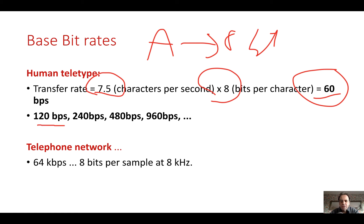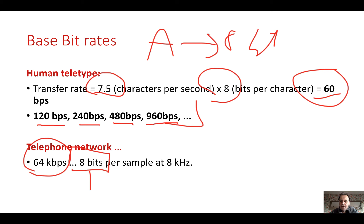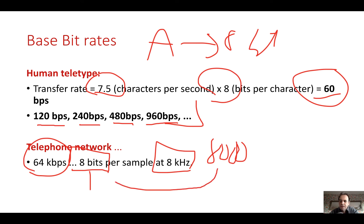We then multiplied that up to 120 bits per second and so on in the telephone network. The most basic form of audio sampling — which we'll cover later — is to take each sample with eight bits and sample 8000 times per second. We sample at twice the highest frequency of the signal, giving a base rate of 64 kilobits or 64,000 bits per second, which tends to be the core transmission speed on many telecommunications networks for transmitting audio.